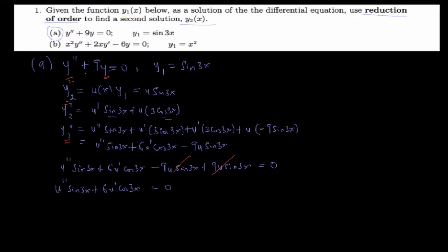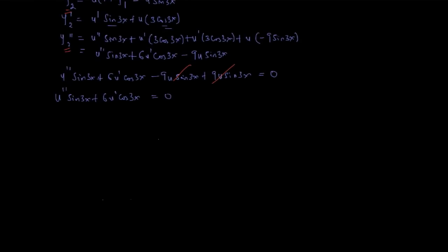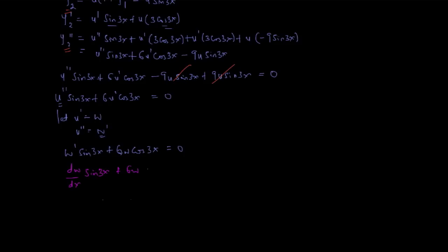Our aim is to reduce this second-order equation to a first-order one. Even after substitution we still have the second derivative, so we let u' = w, which implies u'' = w'. Making this substitution gives us: w'·sin(3x) + 6w·cos(3x) = 0, or equivalently dw/dx·sin(3x) + 6w·cos(3x) = 0.